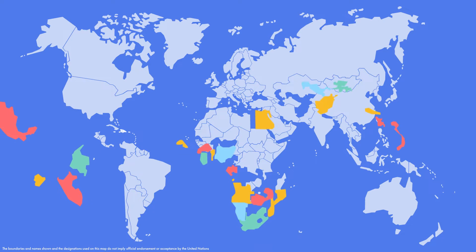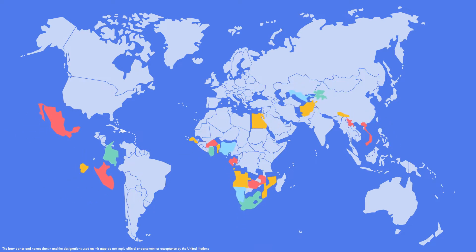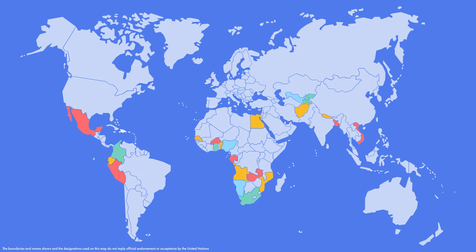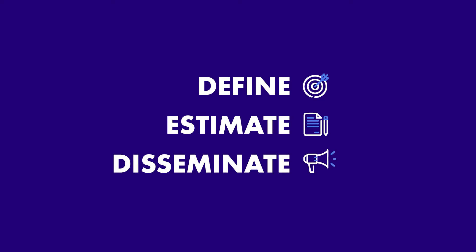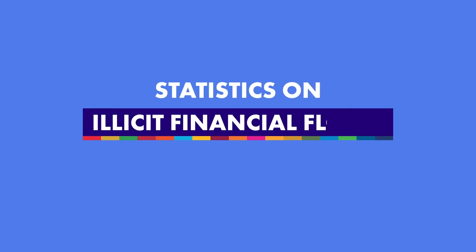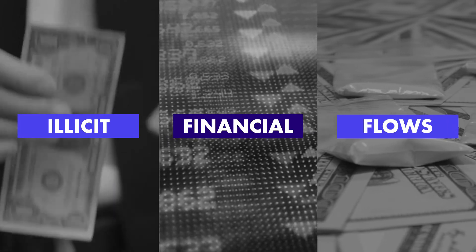The main objective of this project is to work with member states to be able to quantify and measure illicit financial flows, disseminate the statistics to raise awareness about the issue, and then inform further decisions on how to deal with illicit financial flows.